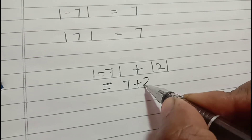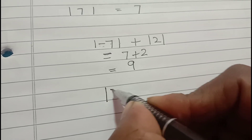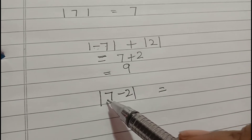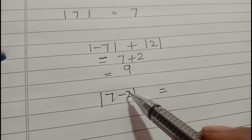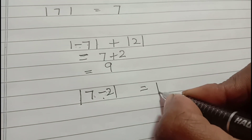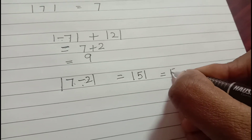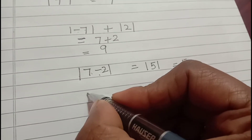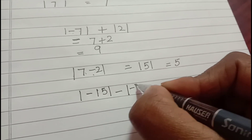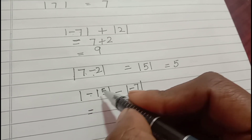But if I have |7 - 2|, see that seven minus two is inside the mod sign. So here you will subtract: seven minus two is five, and mod of five is five.